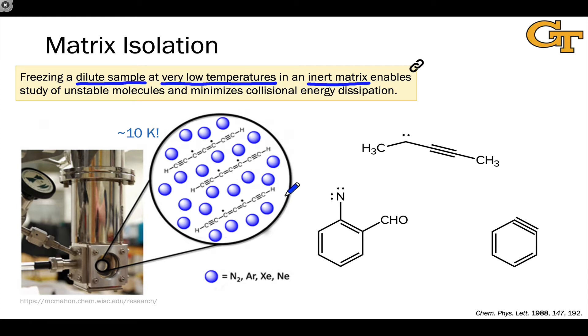What we can do with matrix isolation is a number of things that are difficult or impossible at room temperature and solution. We can study unstable molecules. For example, these diradicals you see right here come from the McMahon Research Group website at Wisconsin. These would be very difficult to study under room temperature solution conditions. And what we can do is turn off collisional energy dissipation.